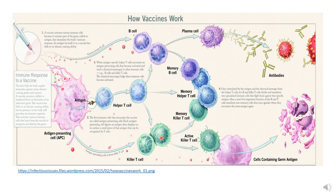These killer T cells also become long-term memory killer T cells, or these helper T cells become memory T cells. So if you have a good vaccine, you will generate very good memory B cells and memory helper T cells.